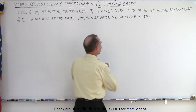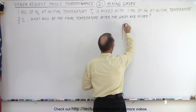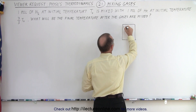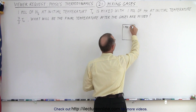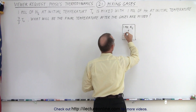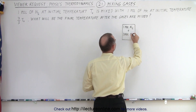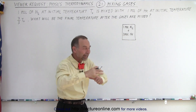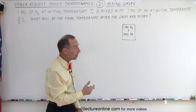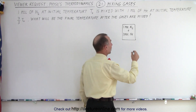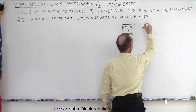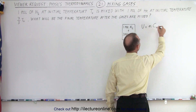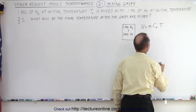When you think about it, there's going to be a system, and the system is going to contain two types of molecules: one mole of nitrogen plus one mole of helium. They both bring a certain amount of energy into the system. We'll use the equation that the internal energy of a gas is equal to the number of moles times Cᵥ times the temperature in Kelvin.